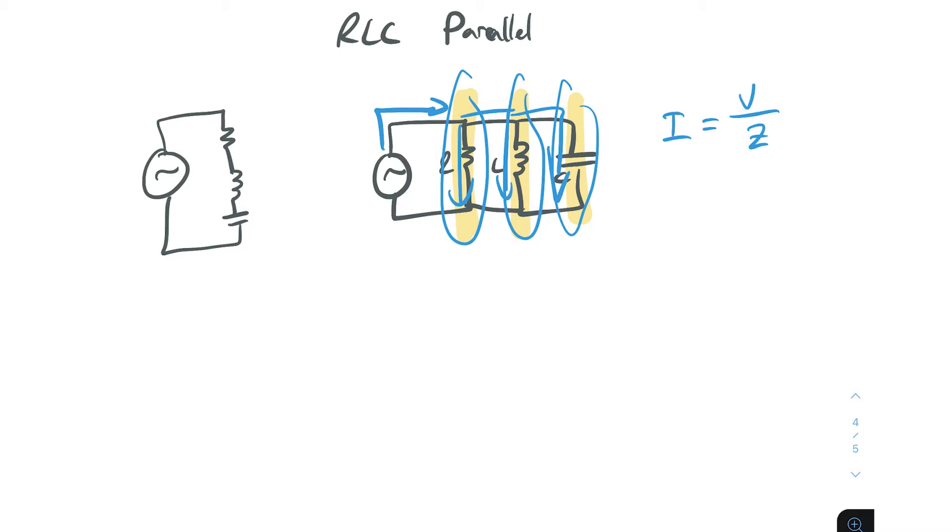So the resistor one's the easiest, the impedance is just its value. To find the current for the inductor, it's going to be the voltage applied by jXL, and to find the current for the capacitor, then it's going to be the voltage applied over minus jXC.